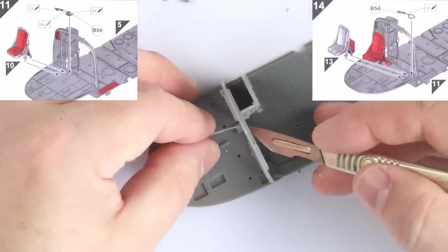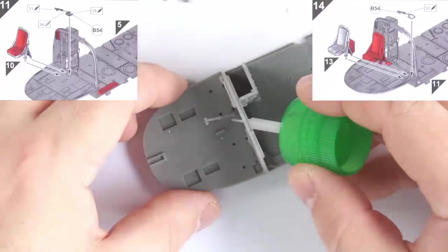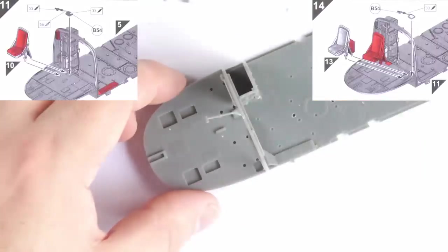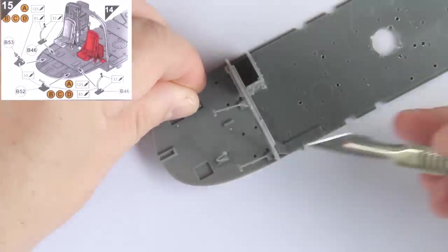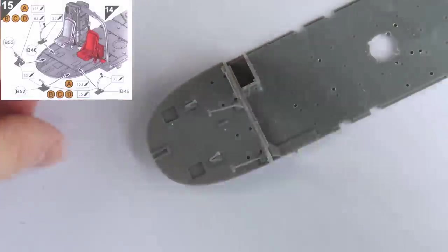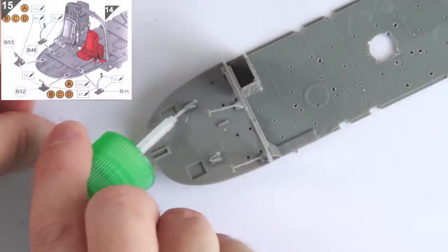Steps 11, 14, and 15 have you put all the cockpit controls and seats in, but I left the seats out to paint separately. Adding these now is a bit of a gamble however, since they are very delicate, and I did break a couple of the pieces as we'll see later.